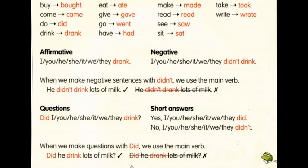З усіма особами вживається просто друга форма. Перша форма у нас – drink – пити, друга форма – drank. Наприклад: я пив – I drank, ти пив – you drank, вона пила – she drank, воно пило – it drank, ми пили – we drank, вони пили – they drank. У цьому часі не додається -s, ніякі інші допоміжні слова, ні закінчення -ing. Просто вживаємо особу та слово у минулому часі – наше irregular verb у другій формі.